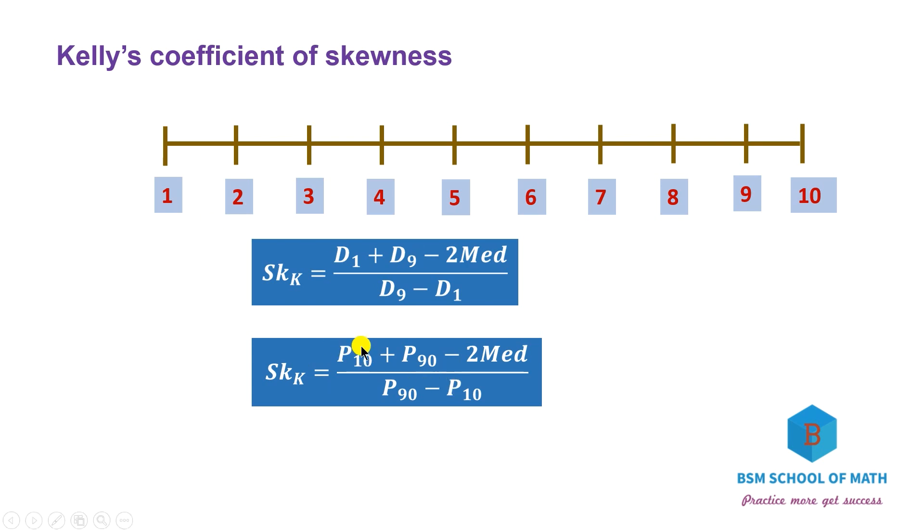The percentile formula uses P10, P90, and P50. P50 is the median. So we have two formulas we can write.